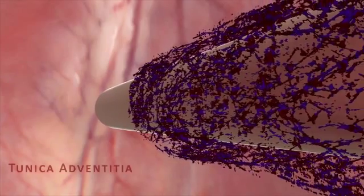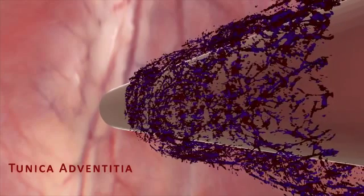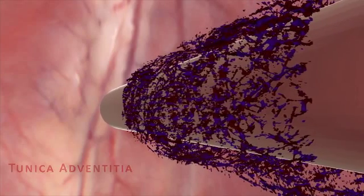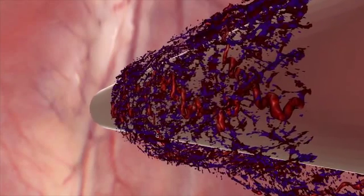The tunica adventitia is the outermost layer of a blood vessel. It is a sheath of connective tissue which contains nerves and several other cell types.